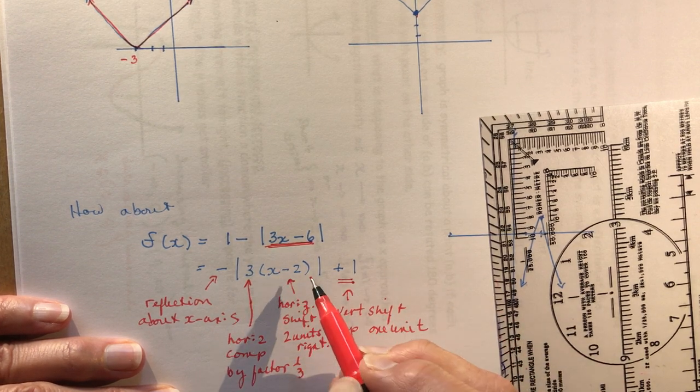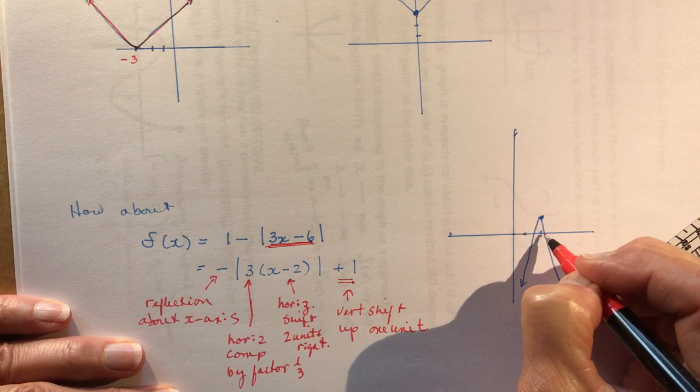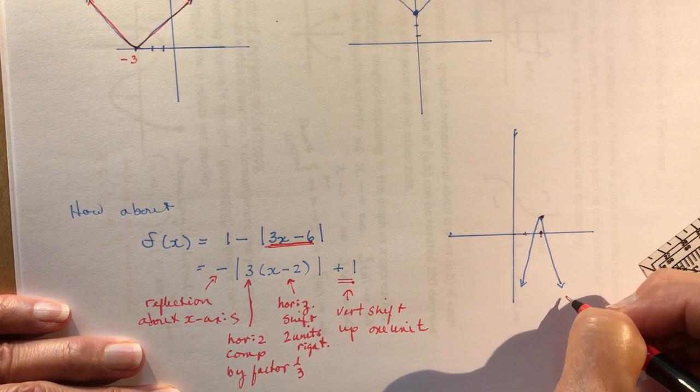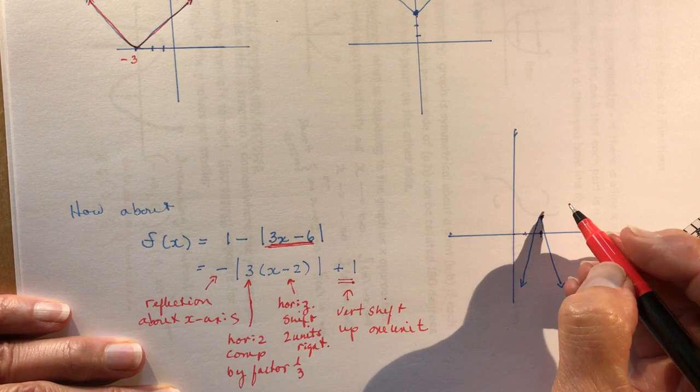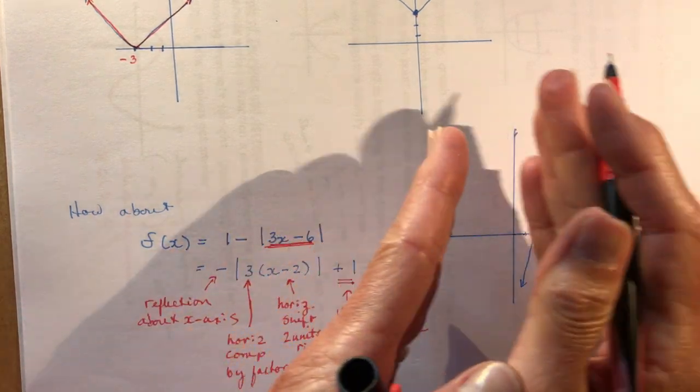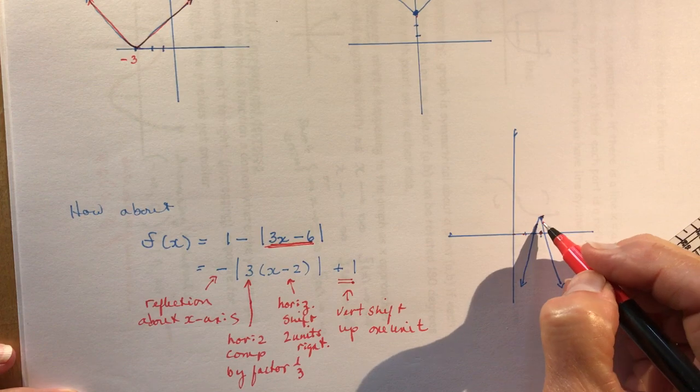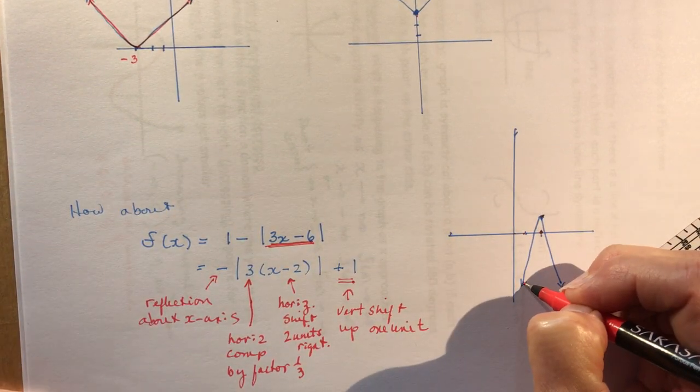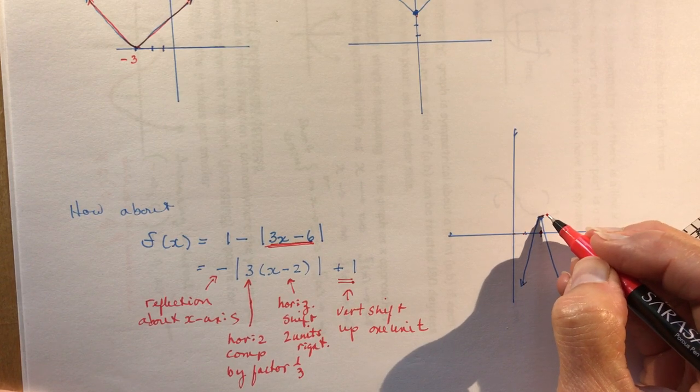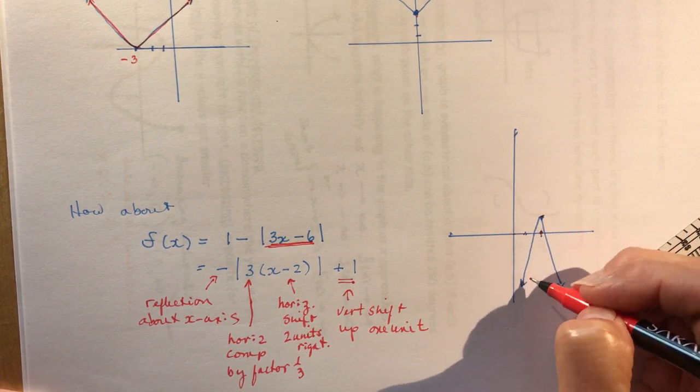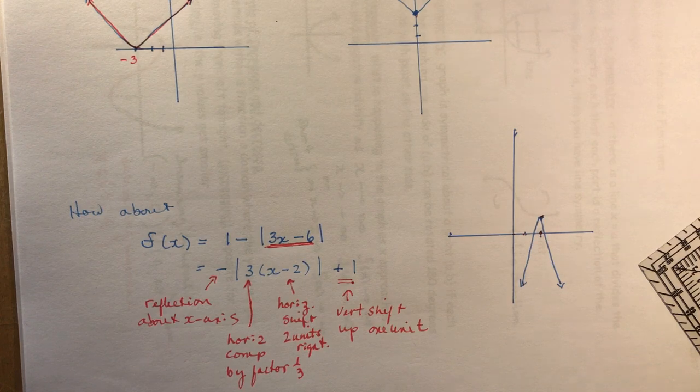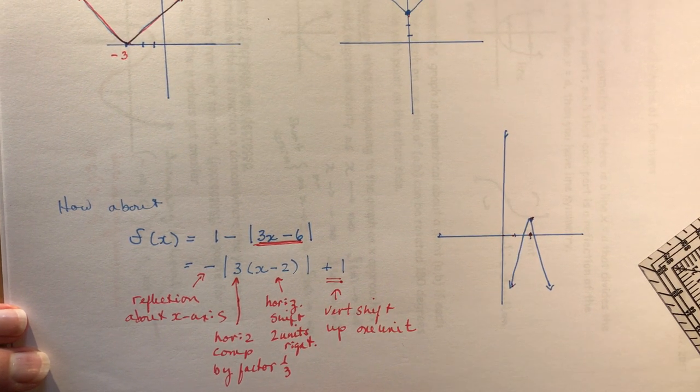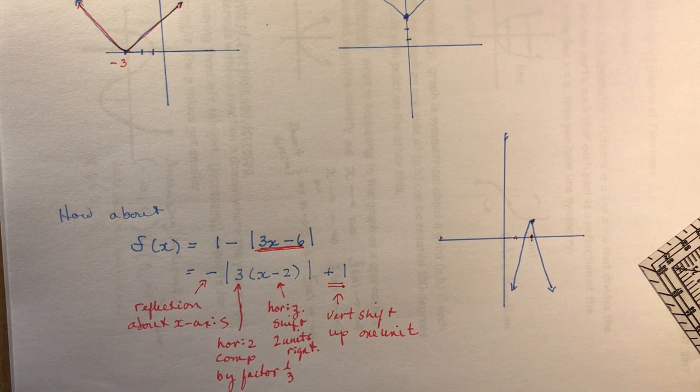So I moved it two to the right, up one. Reflected so make it go down instead of up. Compress it by one-third—compressing means to make it look like a vertical stretch is a horizontal compression. I could be a little more accurate by plugging in some values here, but this will give you the idea of what it should look like. Okay, so that's it for 1.2 absolute values and some short transformation exercises.